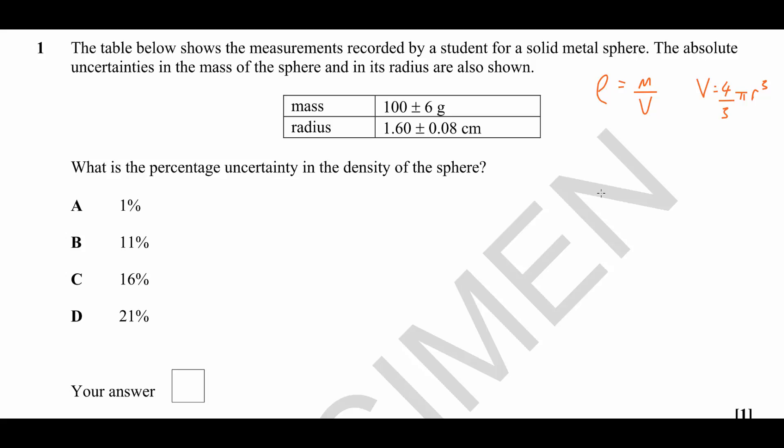Now this is a question about combining uncertainties. In order to find the uncertainty in the density, you'd need to add together the percentage uncertainties in the mass and in the volume.